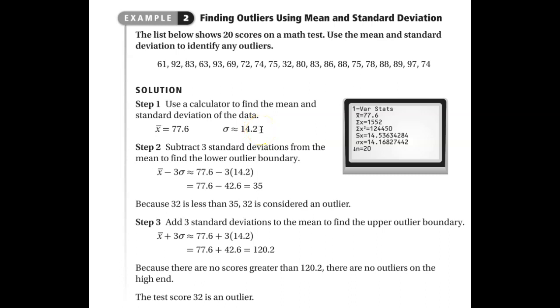The formula to find the lower bound is the mean minus three times the standard deviation. So that's 77.6 minus three times 14.2. Doing that math, you get 35.